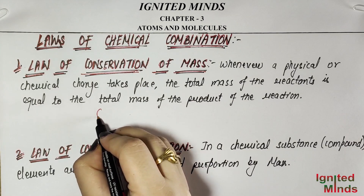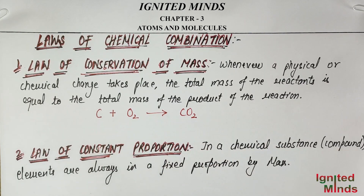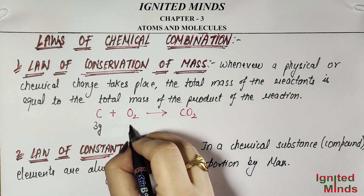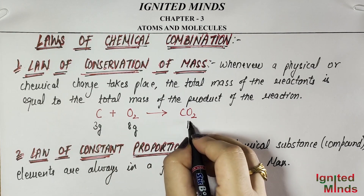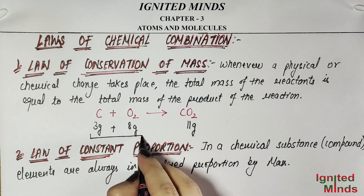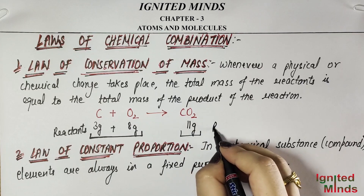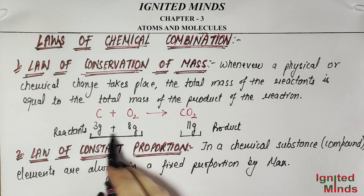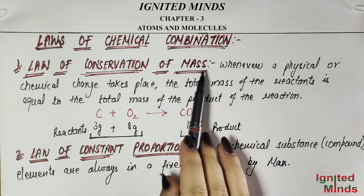if we take carbon and oxygen — carbon plus oxygen gives carbon dioxide. The total mass of carbon and oxygen is equal to the total mass of carbon dioxide. If carbon is 8 grams and oxygen is 3 grams, how much will the product be? 8 plus 3 equals 11 grams. So these are your reactants which are reacting, and this is your product after the reaction. This is the Law of Conservation of Mass.